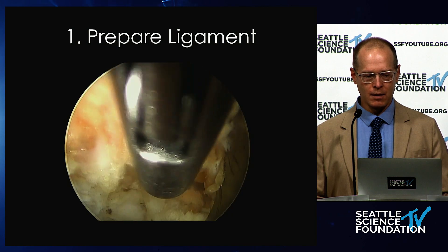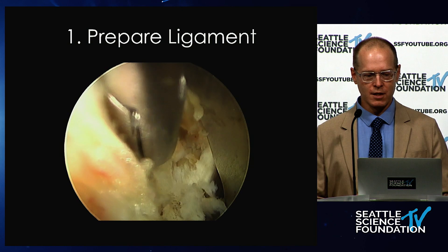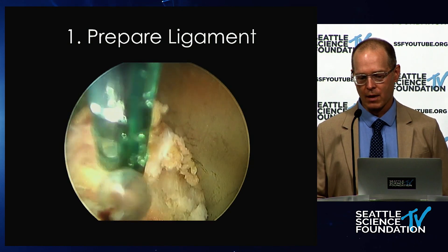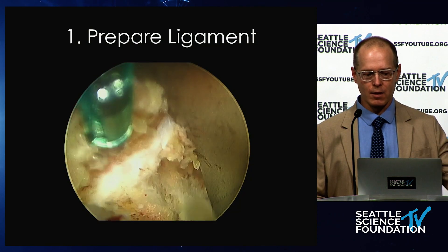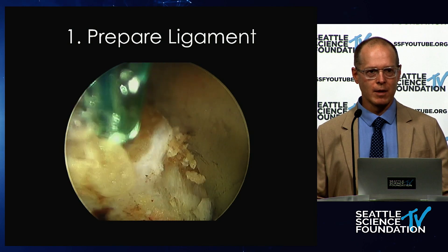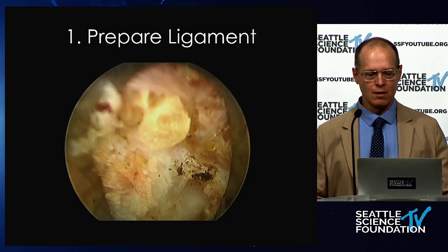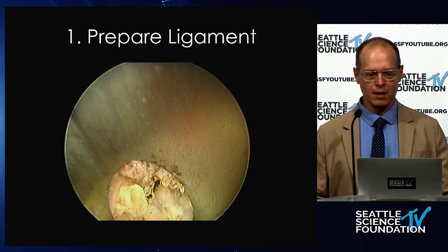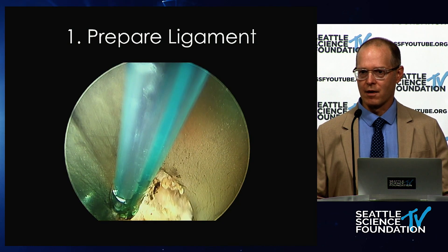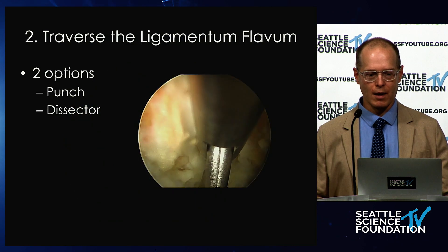Here we are preparing the ligament using a pituitary to remove soft tissue. This can be done relatively quickly. You can see there a little bit of bleeders, and we're using bipolar cautery to clean up. You just want to get a nice sight window of the ligamentum flavum. In live patients, you're definitely going to see muscle as pink and red, fat as yellow, and ligamentum flavum as a nice fibrous texture.